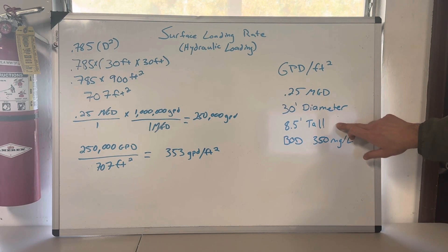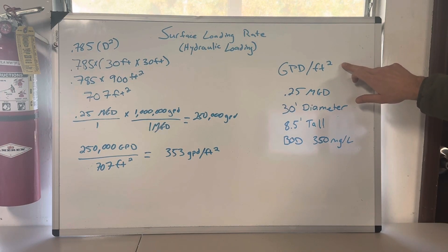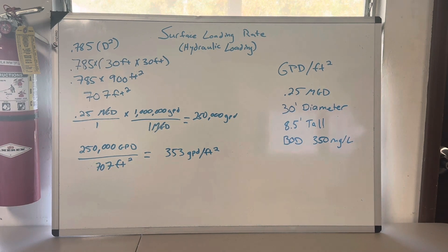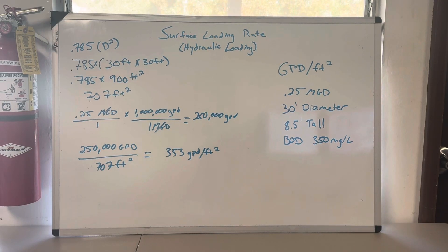We don't need the height for square foot. If you're confused as to why, go back into my area video and watch how we find the area of a circle. And we don't need BOD - that's an organic loading variable. So we are looking just for the flow over the area of the clarifier.